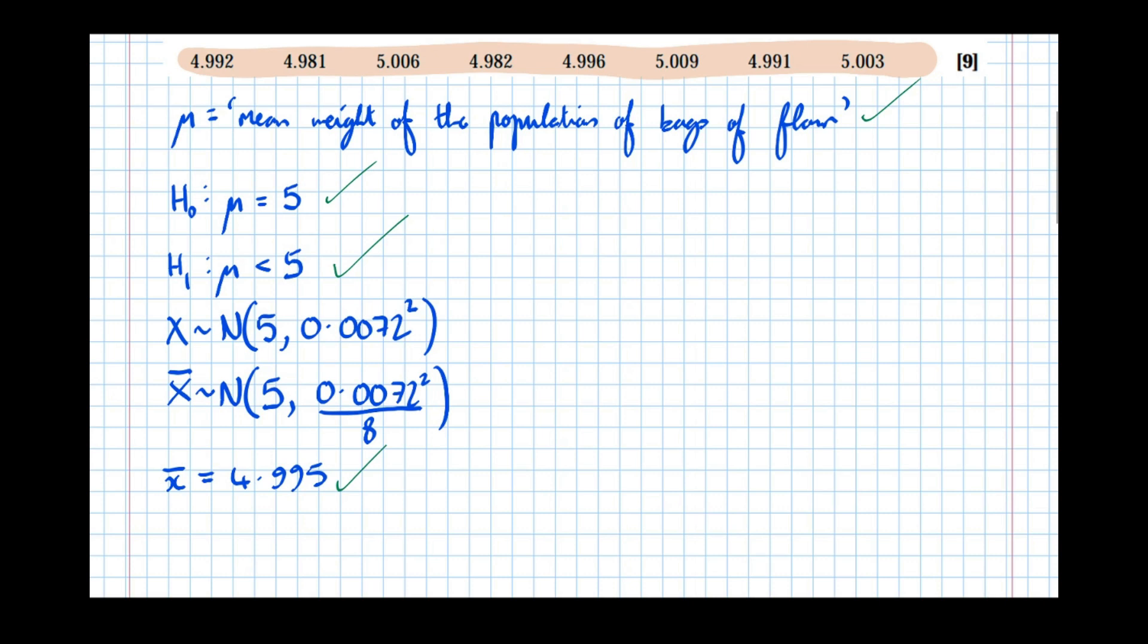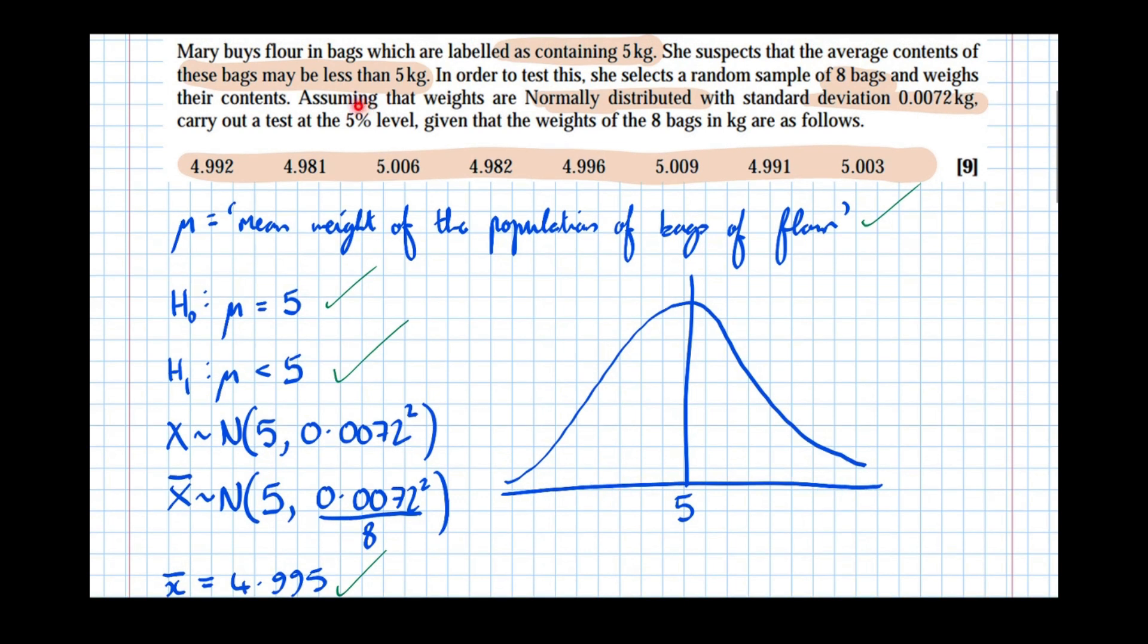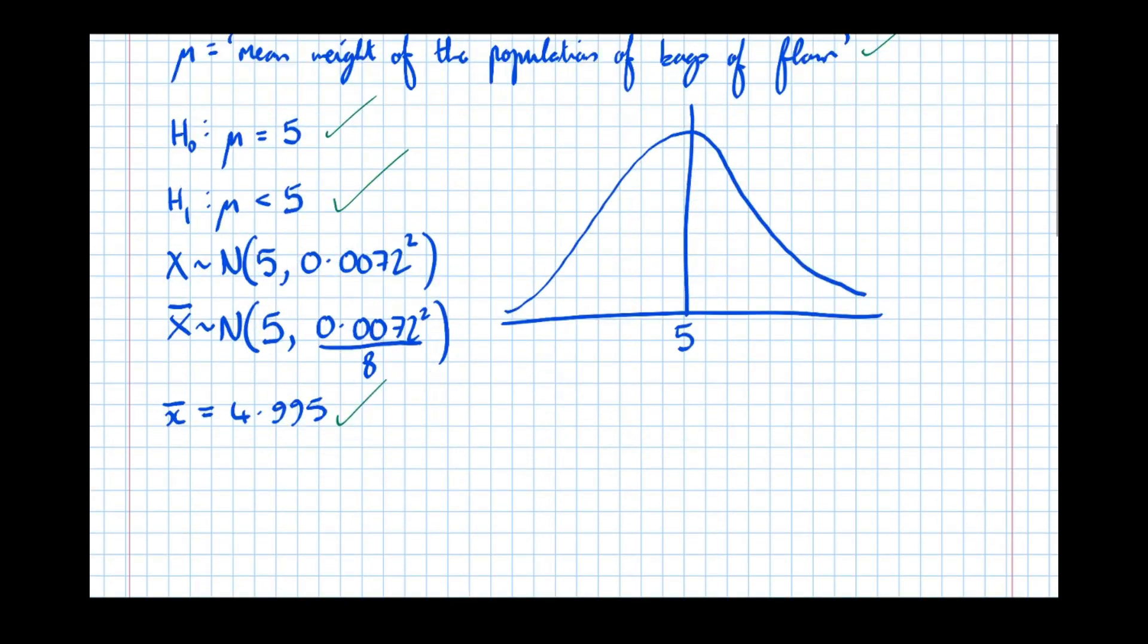Now carrying out the hypothesis test. A quick diagram to actually explain the test we're carrying out. There's our normal distribution with mean 5, that's what we'd assume to be true. We're saying if μ truly is 5, how likely were we to have got that mean there, a mean as low as 4.995? Obviously that suggests the mean's decreased, but is it enough evidence to say with 95% confidence that the mean's decreased?